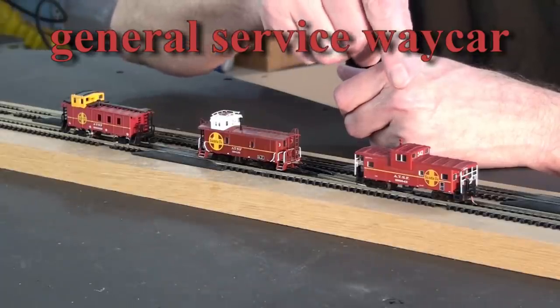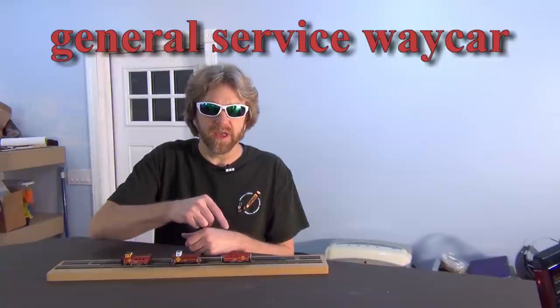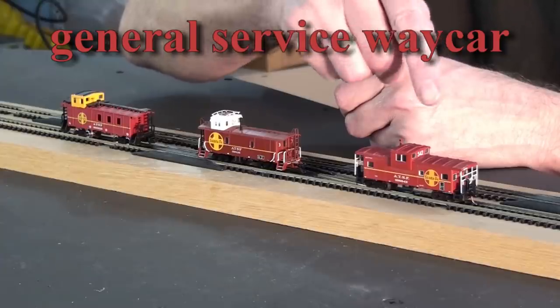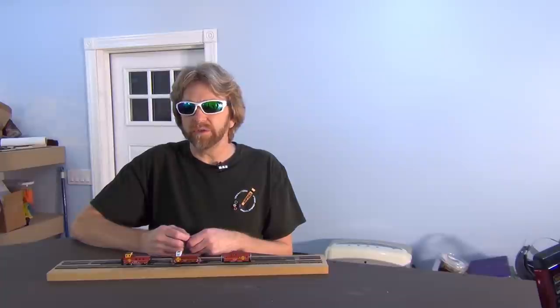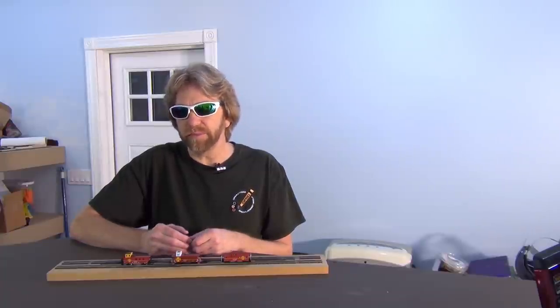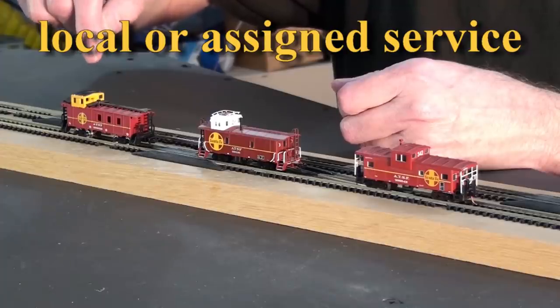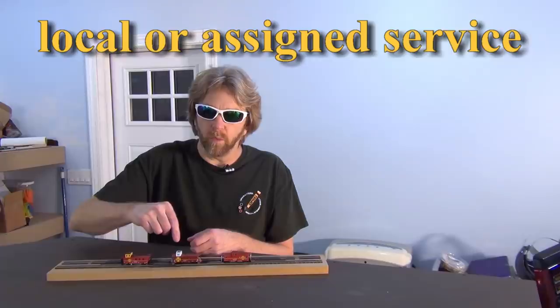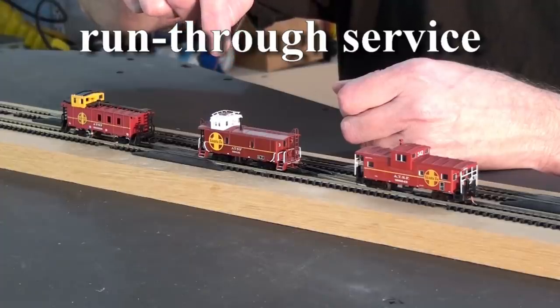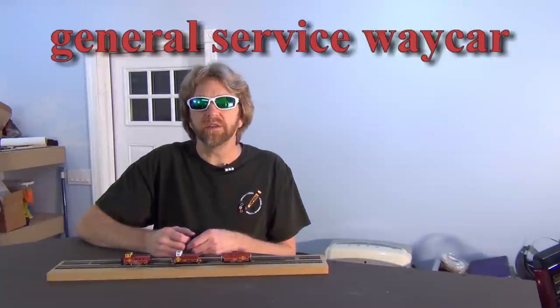The final caboose with the red cupula is your standard-issue caboose. It's good for pretty much anything you want to use it for. So again, if you want to use some sort of codes with your cabooses, the yellow is attached to a yard and local service only. White is run-through or transfer. And the red is everything else.